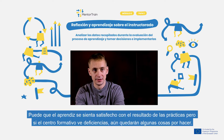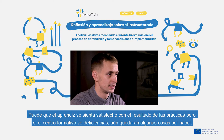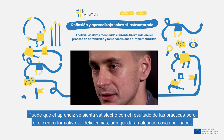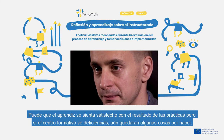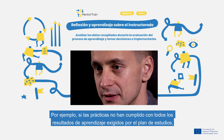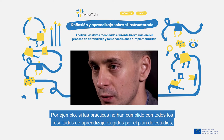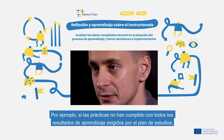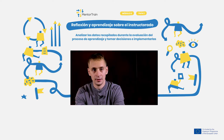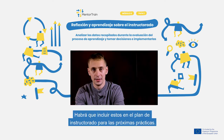A student might be satisfied with the apprenticeship, but if the school sees significant shortcomings, you still need to take action. For example, if the apprenticeship did not fulfill all the learning outcomes stated in the syllabus, you still need to include them in your mentoring plan.